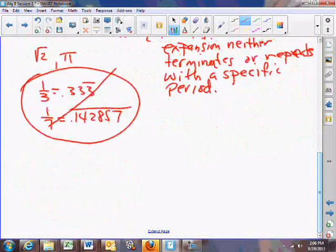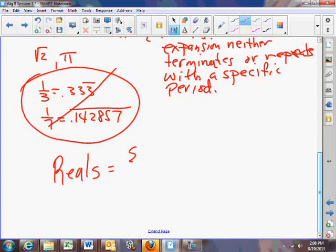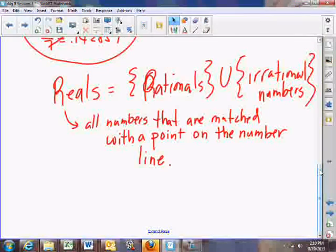Now, what we do is we say we're going to add the irrational numbers to the rational numbers, and when we do, we get the real numbers. The reals are the set of rational numbers plus the irrational numbers.